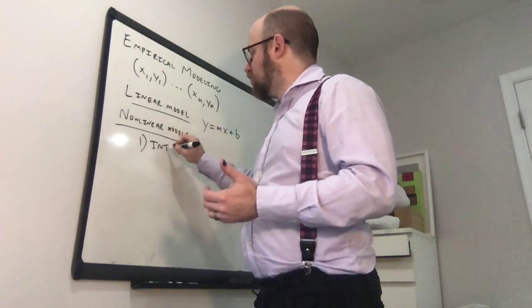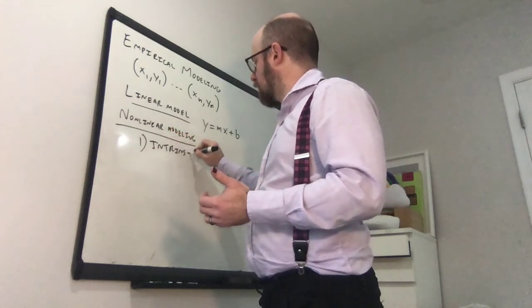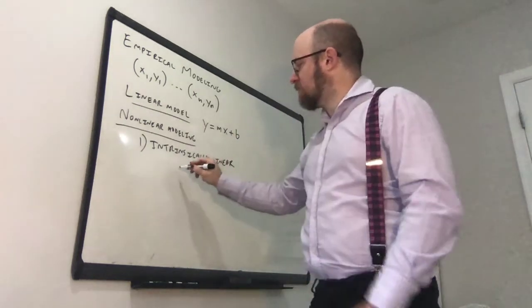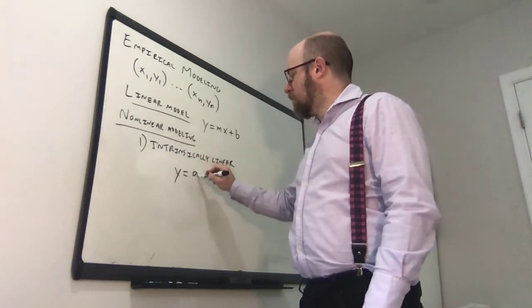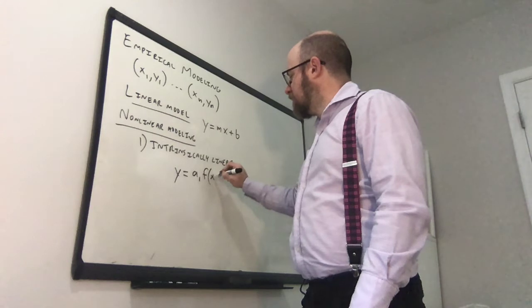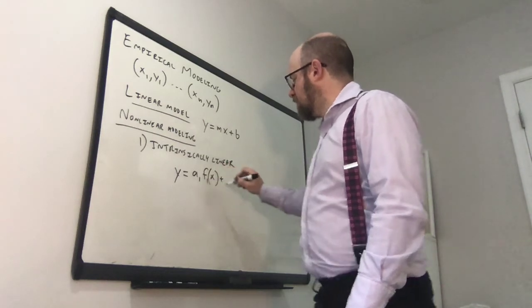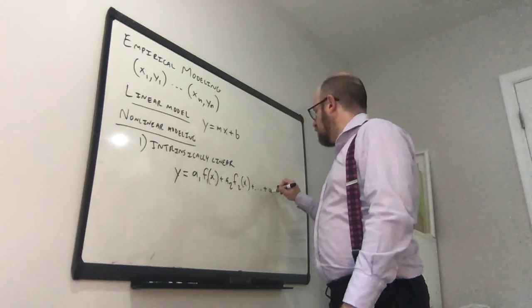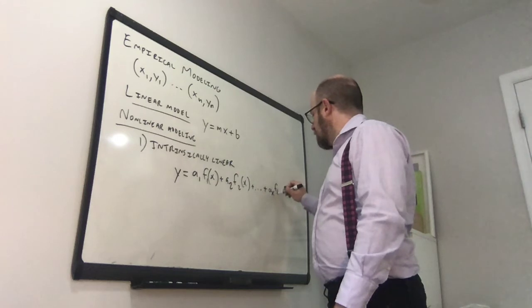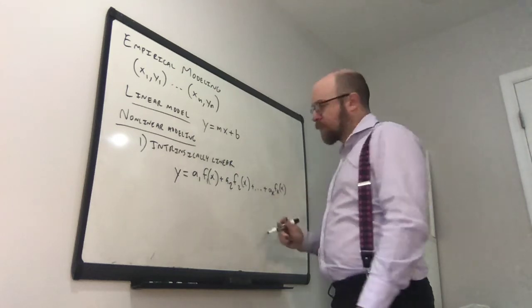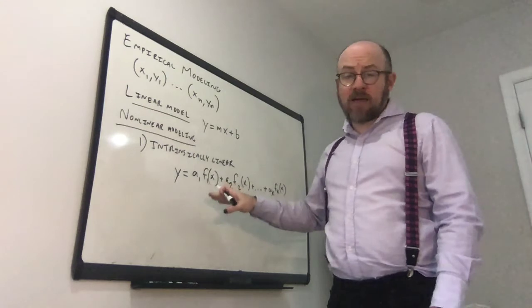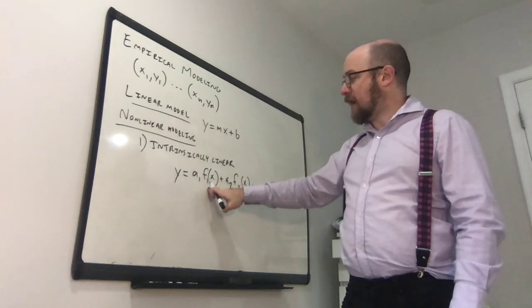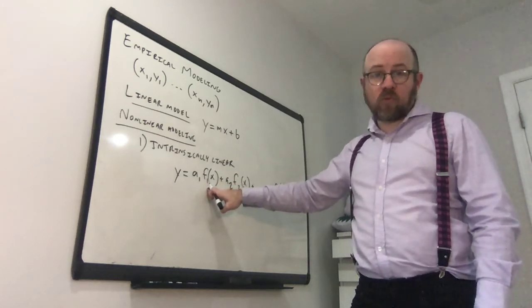So the first one is what is called intrinsically linear. And so this is models of the form y equals a1 times some function of x, f1(x), plus a2 times some function of x up to ak times some function of x. So these functions of x may not be linear terms, right? So this would be one example, y equals mx plus b, but you could have something like a polynomial would be intrinsically linear.